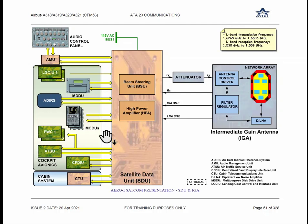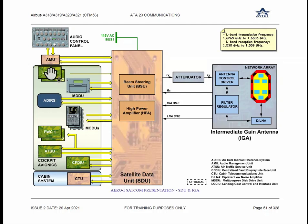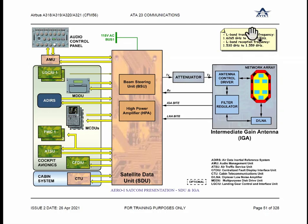Common interfaces include LGCIU, MDDU, and ADIRS for stabilization and beam steering purpose. Also MCDU, FWC, ADSU, and CFDIU — they are all common interfaces. Audio management is also a common interface. The frequency of operation is 1.625 GHz to 1.66 GHz. Transmission and reception frequencies are different to avoid interference — so that there will not be any interference between transmitted and received signals.